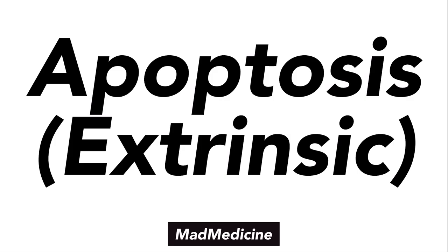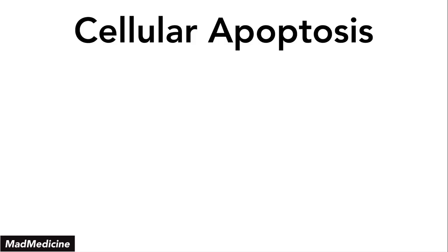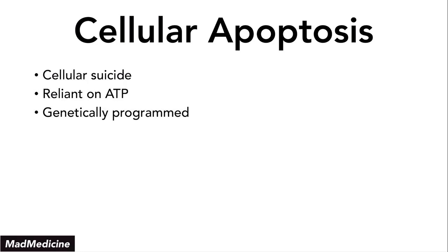We're going to discuss the extrinsic pathway by first doing a quick overview and review of apoptosis. Apoptosis is essentially cellular suicide, which is reliant on ATP, and it is programmed genetically. This is also known as programmed cell death. Because you are dealing with genetic factors and activation of genes and proteins, you need ATP.